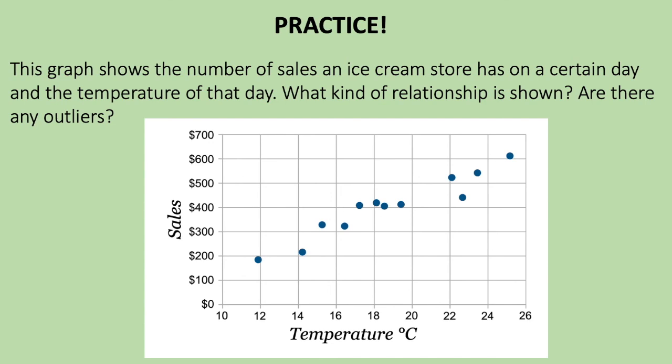This graph shows the number of sales an ice cream store has on a certain day and the temperature of that day. What kind of relationship is shown? Are there any outliers? So in this graph, we have temperature of the day in Celsius and ice cream sales. So when looking at this graph, I see that the data points are gradually going in this direction. So as the data points are going up on the y-axis, they are also going up on the x-axis.